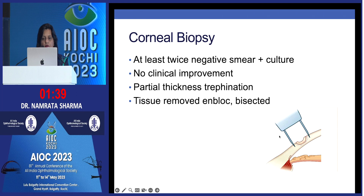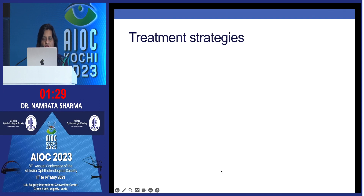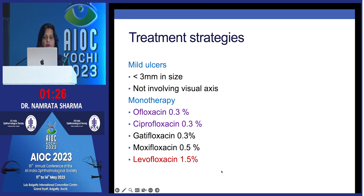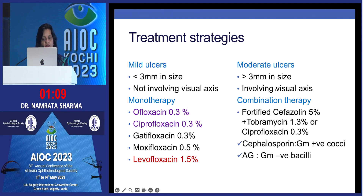Corneal biopsy should be done for at least twice-negative cases with no clinical improvement; tissue is removed en-bloc after partial-thickness trephination. Treatment strategies: for mild ulcers less than 3 mm not involving the visual axis, monotherapy with ofloxacin, ciprofloxacin, gatifloxacin, moxifloxacin, or levofloxacin 1.5% is appropriate. For moderate ulcers more than 3 mm involving the visual axis, start combination therapy — fortified cefazolin 5% with tobramycin 1.3% or with ciprofloxacin 0.3% — to cover both gram-positive and gram-negative organisms.